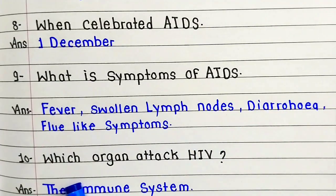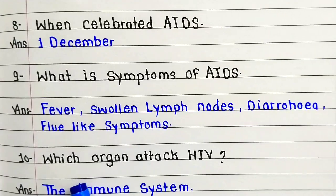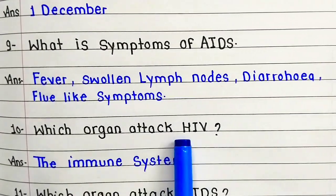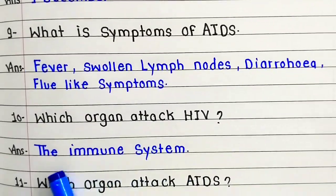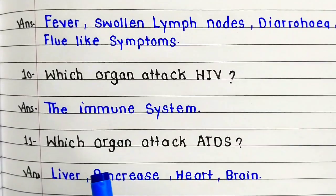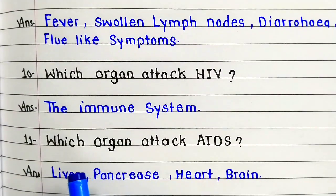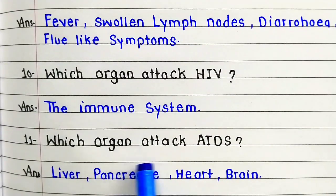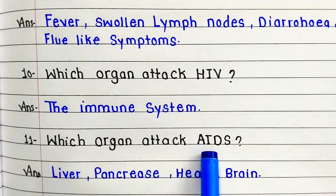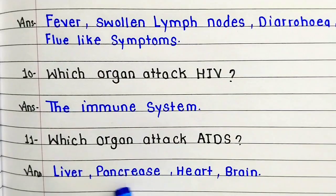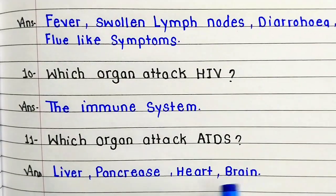Question number ten: which organs does HIV attack? Answer: the immune system. Question number eleven: which organs does AIDS attack? Answer: liver, pancreas, heart, brain.